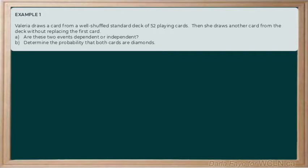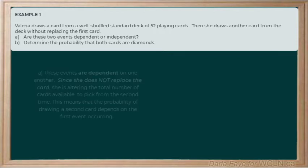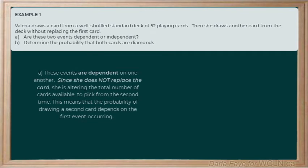Let's tackle the first part, A. These events are certainly dependent on one another. They're similar to that lottery example that we just talked about. Since she does not replace the card, she's altering the total number of cards that are available to pick from the second time around. This means that the probability of drawing a second card depends on the first event occurring, and we know that that's a dependent event.